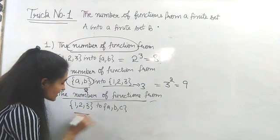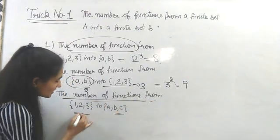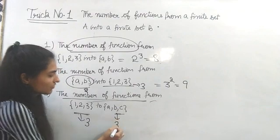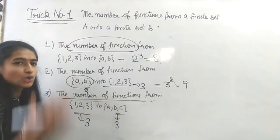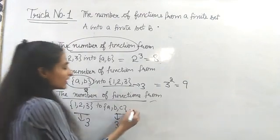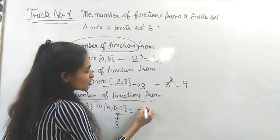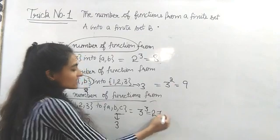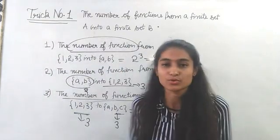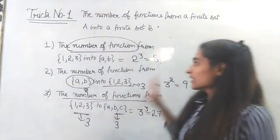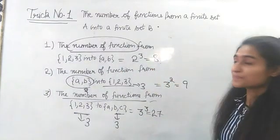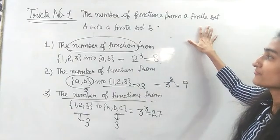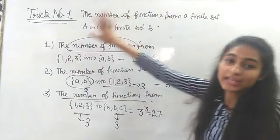Another one: the number of functions from this set to this — both sets contain three elements. So the total number of functions is three raised to power three, that is twenty-seven. These questions are quite simple.